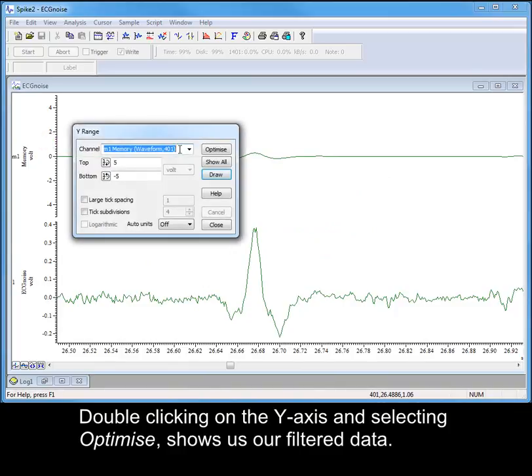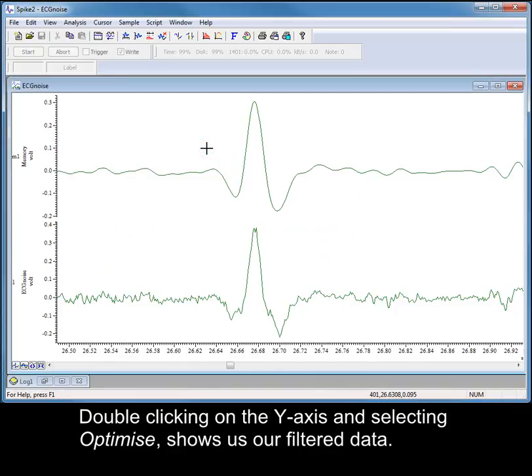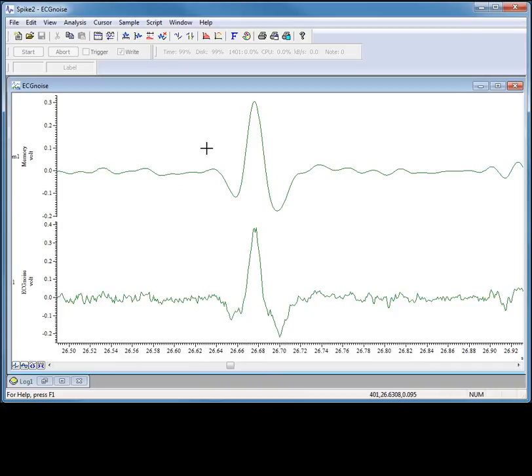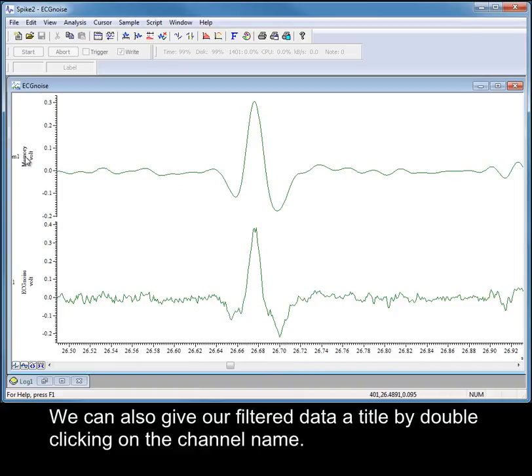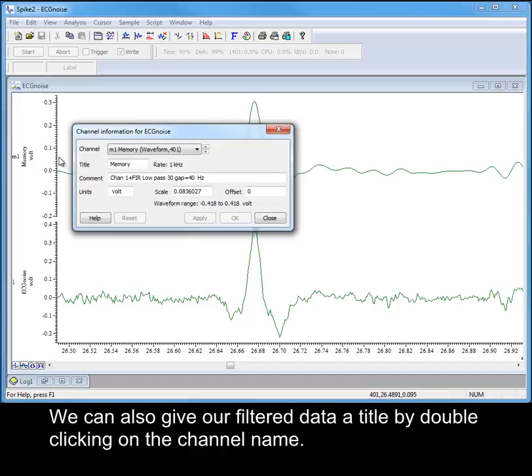Double-clicking on the Y-axis and selecting Optimize shows us our filtered data. We can also give our filtered data a title by double-clicking on the channel name.